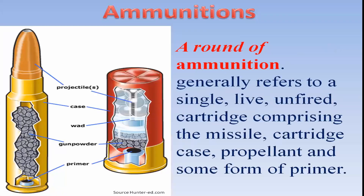Ammunition generally refers to a single live unfired cartridge comprising the missile, cartridge case, propellant, and primer. This is a shotgun ammunition which consists of primer, propellant, and instead of a projectile, it has shots and a cartridge case.